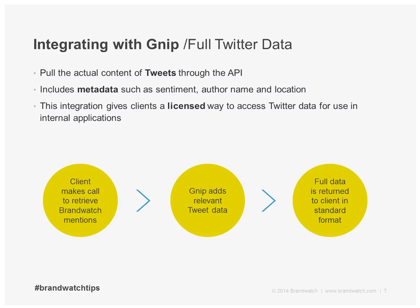As Twitter's first certified data reseller, Gnip is able to provide all of this content in a fully licensed way through our integration with the Brandwatch API. The client makes a call to retrieve mentions, Gnip handles that call on behalf of the client, retrieves the data in Brandwatch, and then merges the Twitter data into the Brandwatch payload — all at one time — so the client gets one simple, single API response with all the data they need.